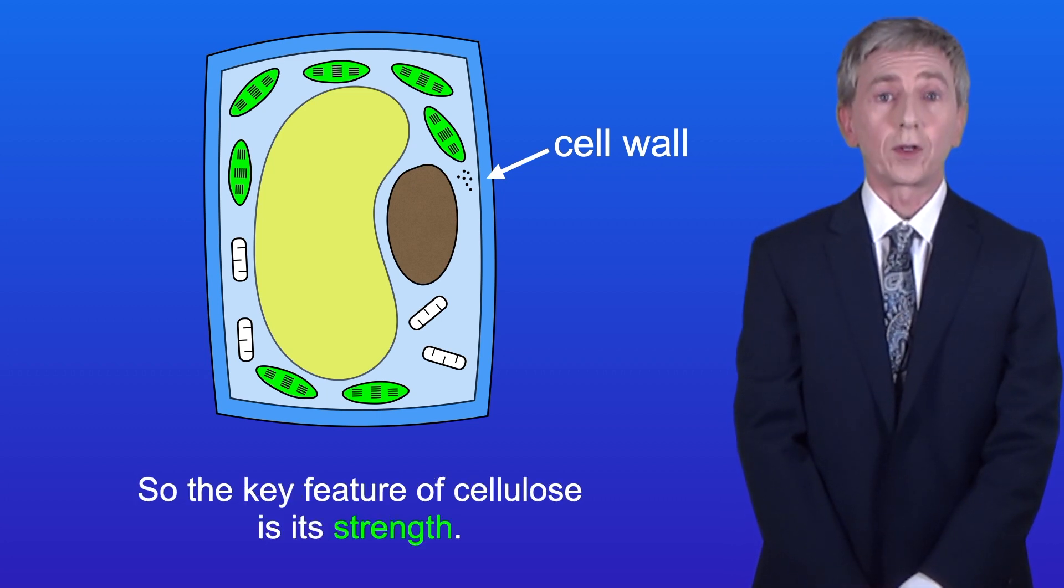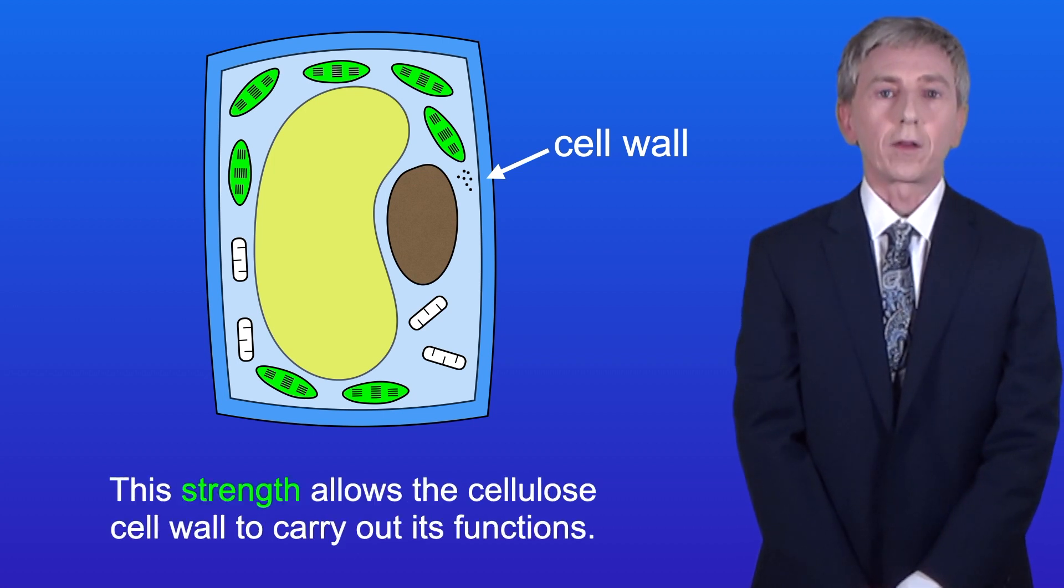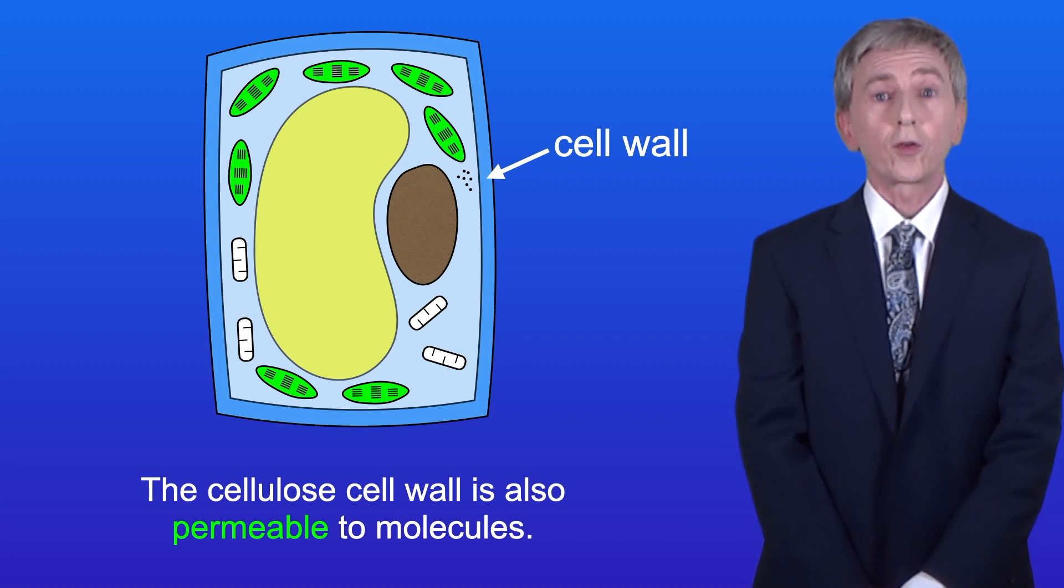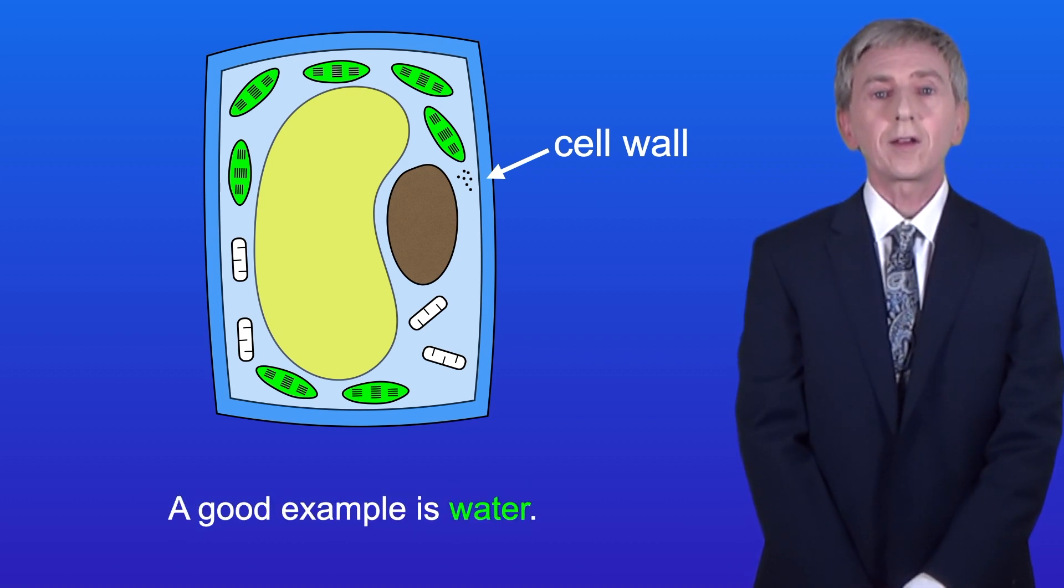So the key feature of cellulose is its strength, and this strength allows the cellulose cell wall to carry out its functions. The cellulose cell wall is also permeable to molecules, and a good example is water.